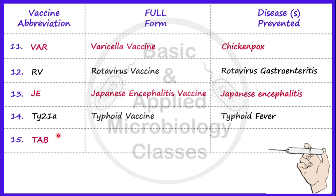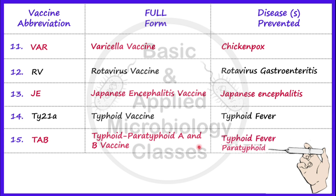Now let's talk about the next vaccine, TAP. TAP stands for Typhoid, Paratyphoid A and B vaccine, and it is used to prevent typhoid fever and paratyphoid fever, which are caused by Salmonella. Typhoid fever is caused by Salmonella typhi, and paratyphoid fever is caused by Salmonella paratyphi A and Salmonella paratyphi B. TAP can be given by intramuscular route, but capsules are also available which are given orally.